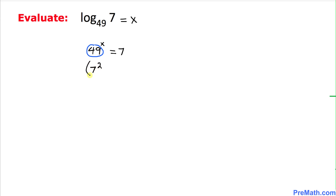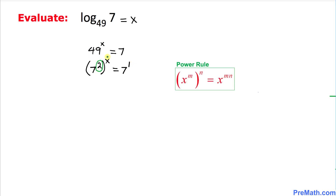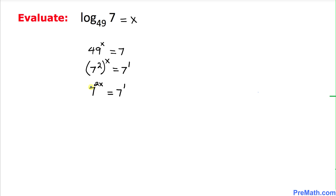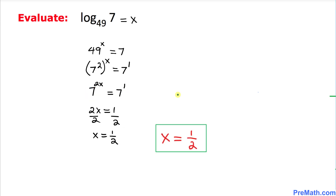So we have 7 power 2 then power x equal to 7 power 1. Using the power rule to multiply the repeated exponents 2 and x, we get 7 power 2x equal to 7 power 1. Since the base is the same on both sides, we equate exponents: 2x = 1. Dividing both sides by 2, x equals 1 over 2, and that is our final answer.